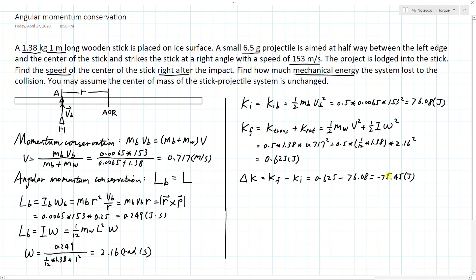To summarize: since there are no external forces, both linear momentum and angular momentum are conserved. From linear momentum conservation we find how fast the center of mass translates. From angular momentum conservation we find how fast the stick spins. The total final kinetic energy includes both translation of the center of mass and rotation around it, whereas the bullet's initial kinetic energy is only counted once as ½mv².